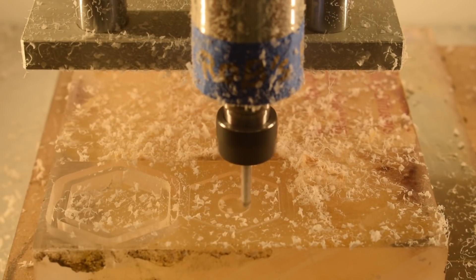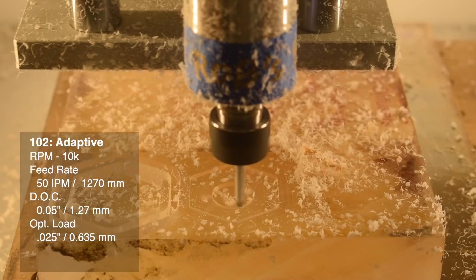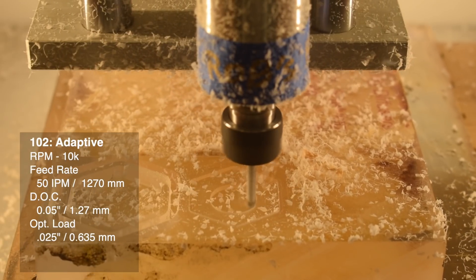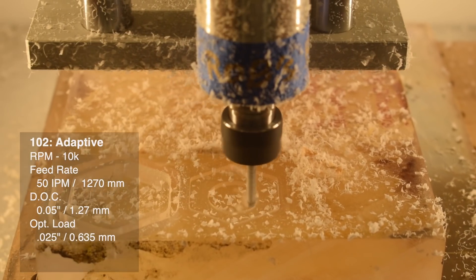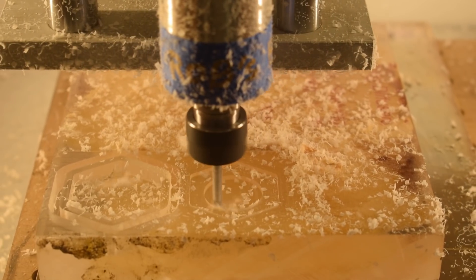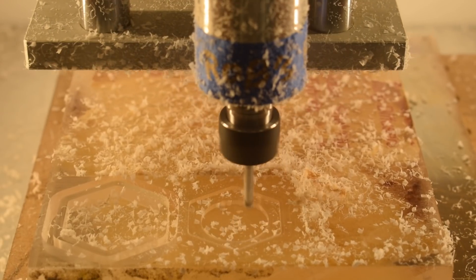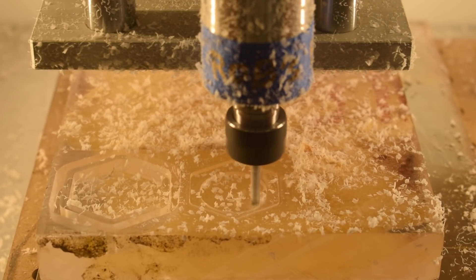And then for adaptive clearing, because adaptive is life, 10,000 RPM, 50 inches per minute, a 0.05 inch depth of cut, and a 0.025 inch optimal load. Take note of the character of the chips here. They're like actual chips. Small, discrete, non-stringy. These will be much less problematic in the long run from a chip evacuation perspective.